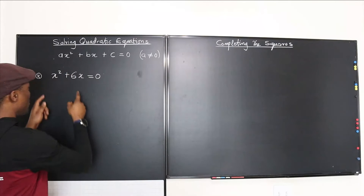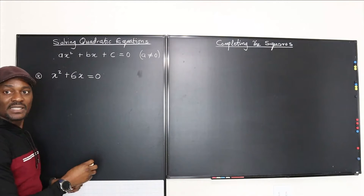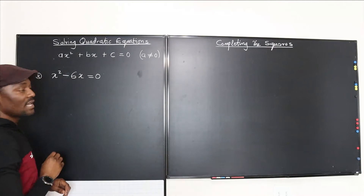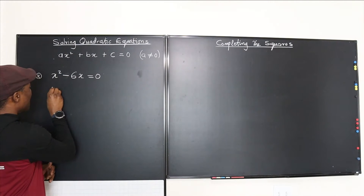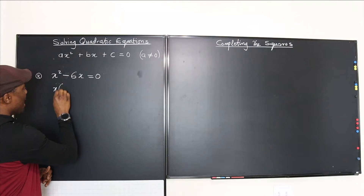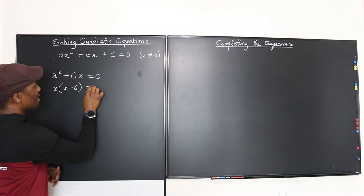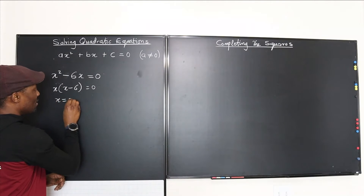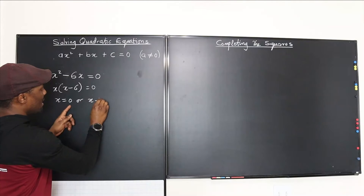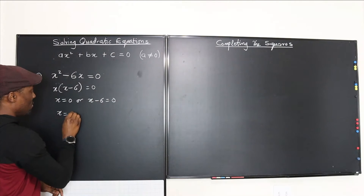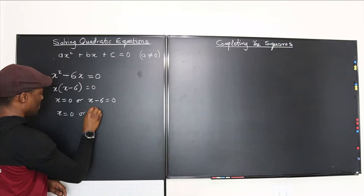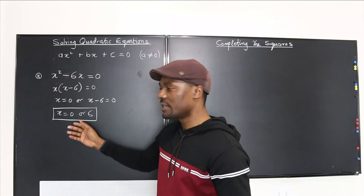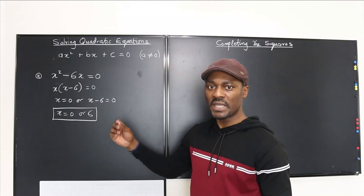Let's solve this based on what we did in the first part by collecting like terms. We have x times x minus 6 equals 0, so our two possible answers are x equals 0 or x equals 6. So if we can do this easily, why do we have to complete the square?